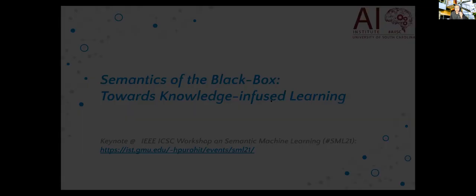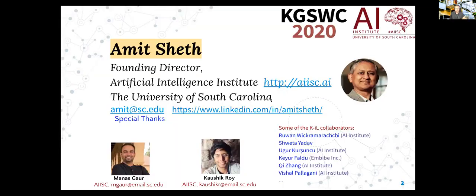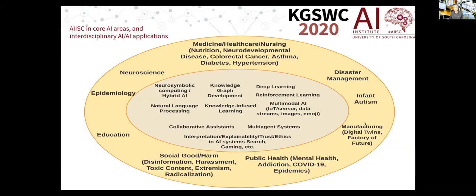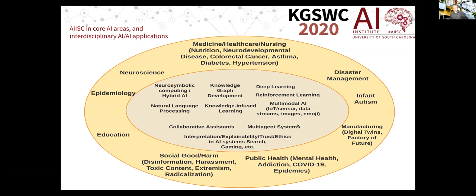Like any major activities, this is a team of four - especially Manas and Kaushik and a whole variety of people who work with me on knowledge-infused learning. As a one-slide introduction to the AI Institute at University of South Carolina, in the center are a whole bunch of AI-centric research that the AI Institute is doing, and on the outer side you can see we are very much into translational research, so practically everything we do has applications working with domain experts and real-world data.